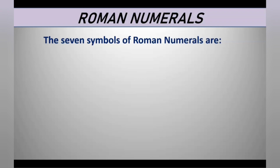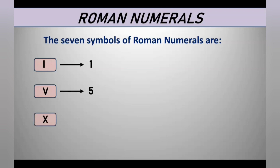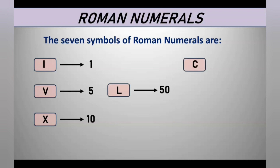In this system, only 7 symbols are used to represent any number. Let us see the 7 symbols of the Roman numerals. I represents 1, V represents 5, X represents 10, L represents 50, C represents 100, D represents 500, and M represents 1000.